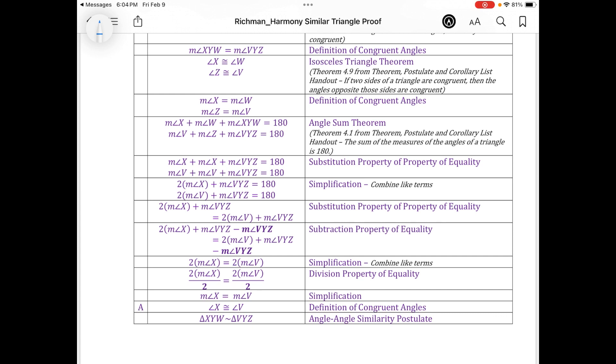And then the smaller one, the measure of angle V plus the measure of angle Z plus the measure of angle VYZ, that also had to be equal to 180.